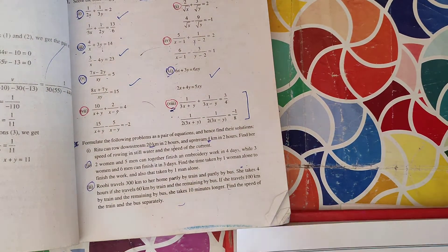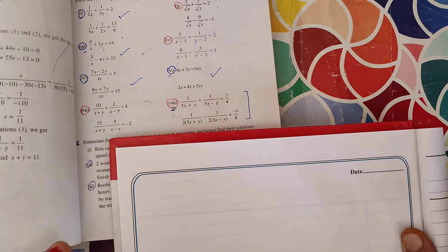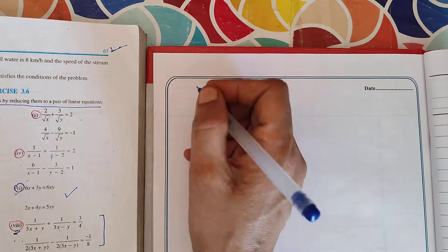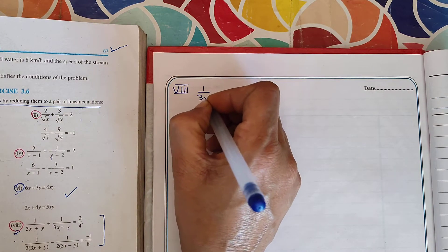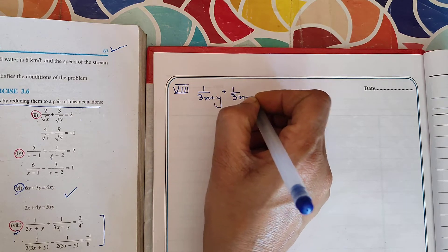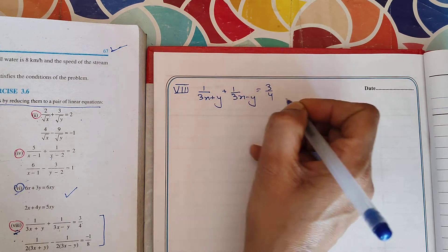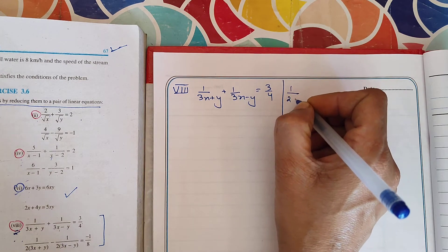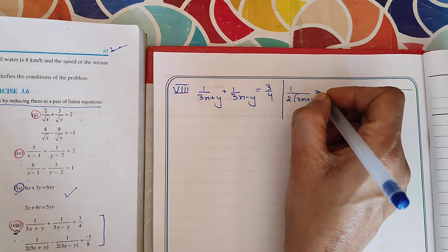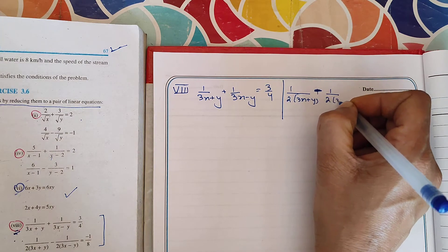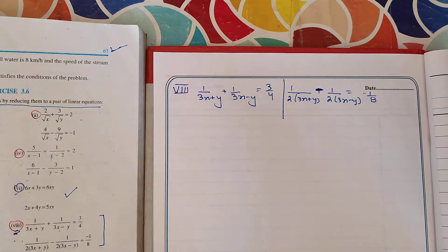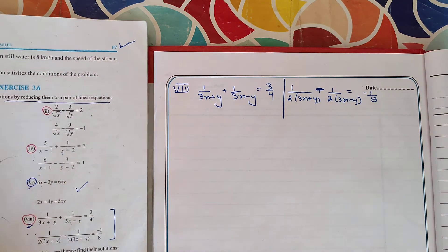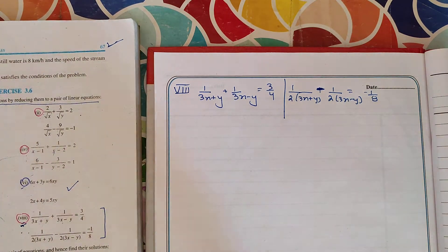First of all, I am writing the statement for you. Students, you will see that the 8th question — here we have two statements given, and I have to solve this by reducing them into their simplest form.